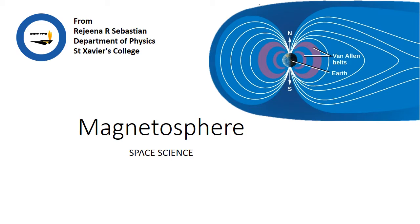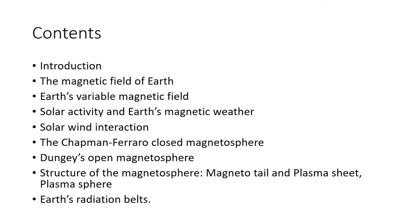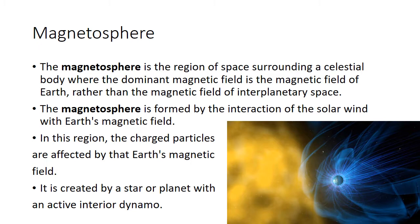Hello dear students, today we will be learning a new chapter — magnetosphere — from your paper space science. In this chapter we will be learning about the magnetosphere of the earth, that is the magnetic field of the earth, earth's variable magnetic field, solar activity and earth's magnetic weather, solar wind interaction, the Chapman-Ferraro closed magnetosphere, the Dungey's open magnetosphere, the structure of magnetosphere such as magnetotail, the plasma sheet, plasma sphere, and also the earth's radiation belts.